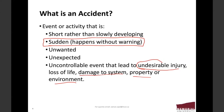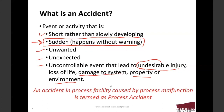To summarize: an accident is short rather than slow developing — it is sudden, unwanted, unexpected, and uncontrollable, leading to undesirable injury, loss of life, damage to the system, property, or environment. An accident in a process facility caused by process malfunctioning is termed a process accident. Process facilities include oil and gas sectors, chemical industries, offshore and onshore oil and gas industries, and other industries where processing is happening.